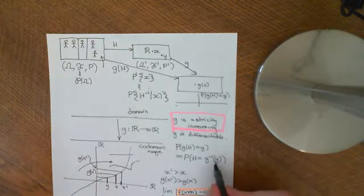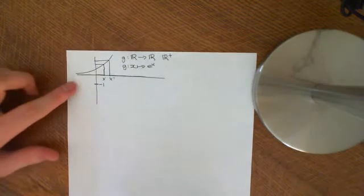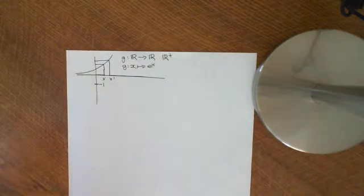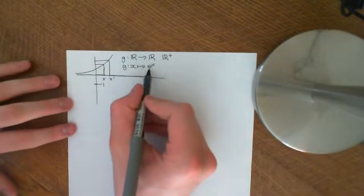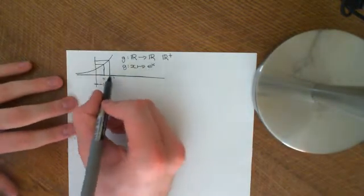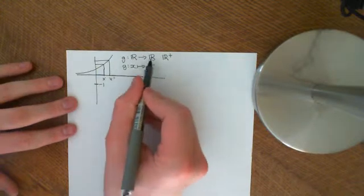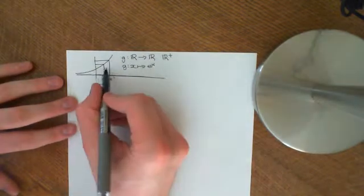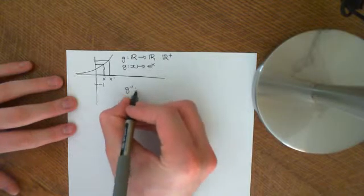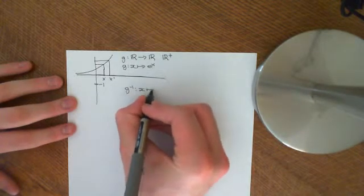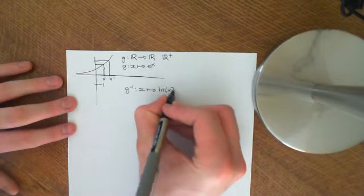This is why the concept of an inverse becomes very important, and why this discussion of it not being onto was important. Because if it's not onto, then it's difficult to define an inverse. However, we can define an inverse for the exponential of x, which operates on all the values which e^x actually maps onto. So we define g inverse of some value little x to be equal to the natural logarithm of x.